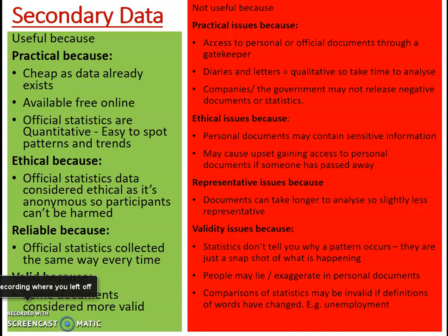When it comes to validity, statistics don't tell you why a pattern occurs — they're just a snapshot of what's happening. You might look at league tables and note that boys are doing less well than girls at GCSE, or that working class students seem to be underperforming compared to middle class students. If you just had statistics, you might wrongly conclude that boys are less clever or that working class students are less clever. To find out why, you need other types of research. Secondary data, particularly statistics, is a great starting point but doesn't give enough information on its own.